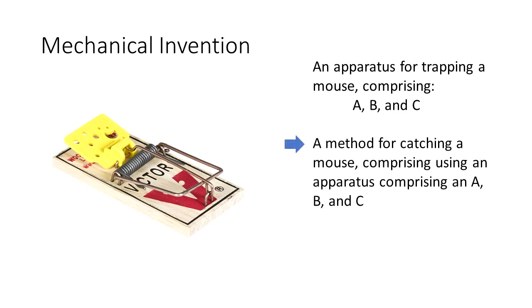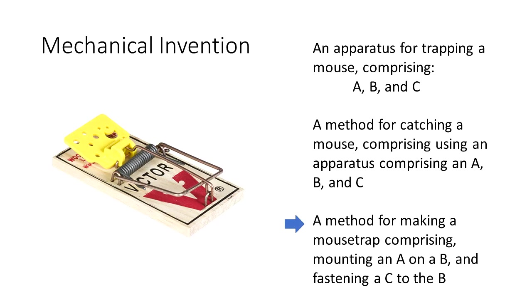It could also be possible to have claims to a method of using the device. So here we have a method for catching a mouse using the trap that comprises an A, B, and C. We could also have a claim family directed to the method of making the mousetrap. So here's a method for making a mousetrap comprising mounting an A onto a B and fastening a C onto the B, and so forth.